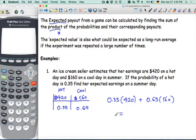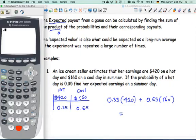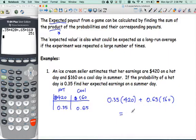So 0.35 times 420 plus 0.65 times 160. And these numbers would definitely be on a calculator section because they're too nasty to work out without a calculator. I would say our expectation would be you'd have a calculator on this problem. It would be $251 is not bad for a day selling ice cream. So let's go to the next example.